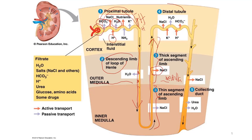Next, what happens in the distal tubule? The distal tubule plays a role in regulating potassium and sodium chloride. This regulation involves variation in the amounts of potassium secreted into the filtrate as well as the amounts of sodium chloride reabsorbed. Like the proximal tubule, the distal tubule also contributes to pH regulation through controlled secretion of hydrogen ions and reabsorption of bicarbonate ions.